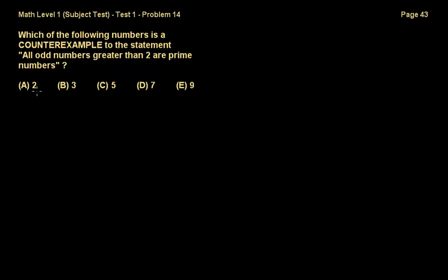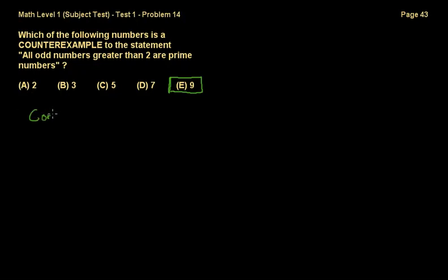Let's look at the options. Option A, which is 2, is not greater than 2, so this statement does not refer to this number. Option B does fulfill those qualifications, but it is a prime number, so we do not want that — we want a counterexample. Option 5 is also prime, option 7 is also prime, so we're left with option E, which is 9. And 9 is indeed an odd number greater than 2, but it is not prime — it is divided by 3. So it busts this theory; it's a counterexample. The correct answer is E.